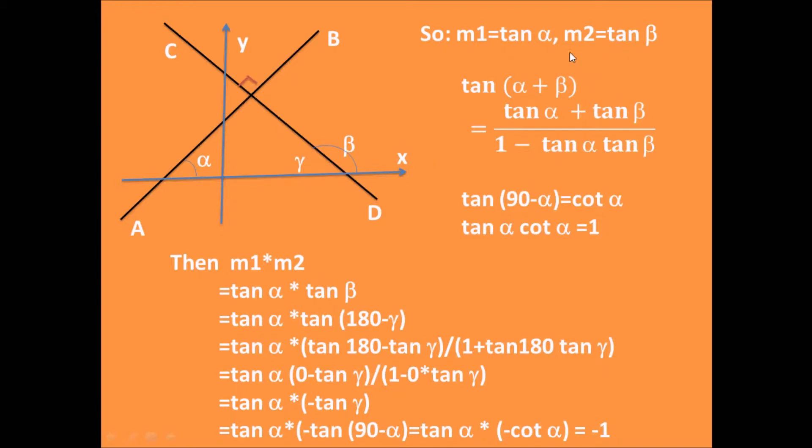Here are some formulas which will be used later. Tangent (α + β) equals tangent α plus tangent β divided by 1 minus tangent α times tangent β. Tangent (90 - α) equals cotangent α. Tangent α times cotangent α equals 1.